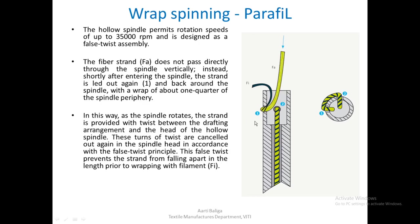As the spindle rotates, the strand is provided with twist between the drafting arrangement and the head of the hollow spindle. There is a drafting system front roller, and from that region right up to where the strand enters and exits the spindle, some amount of twist is inserted due to the false twisting principle. This twist is very important because the staple fibre strand has to sustain itself until the filament is able to wrap around it.